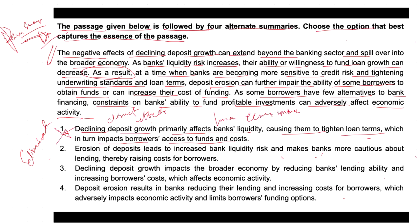Option two states: erosion of deposits leads to increased bank liquidity risk and makes banks more cautious about lending, thereby raising costs for borrowers. This option highlights the impact on bank liquidity and borrowing cost, but misses the broader implication for the economy. The broader economic implication is also needed, which is missing in option two. So option two also cannot be called a complete summary.